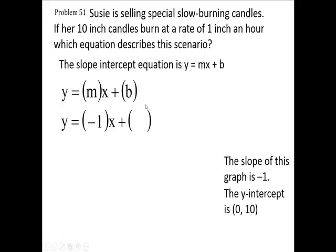When you put zero in here, zero times one is zero. And when x is zero, then this y must equal zero plus, there's your ten. So there's your y-intercept, slope-intercept form, negative one x plus ten.